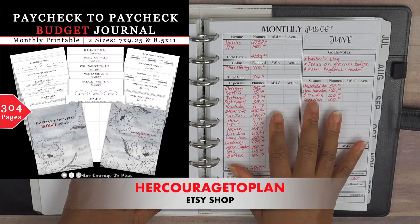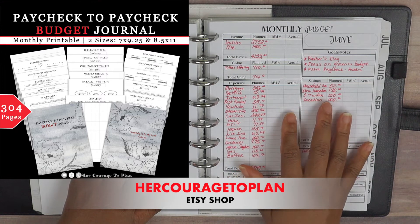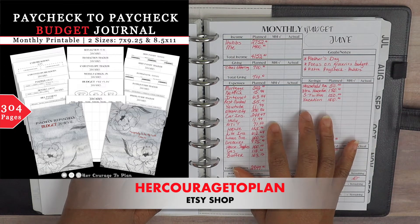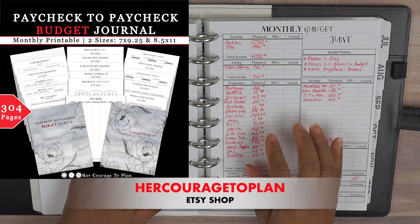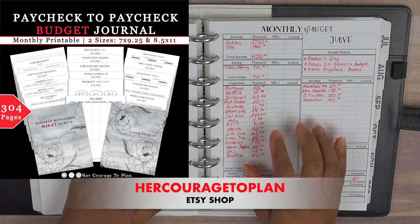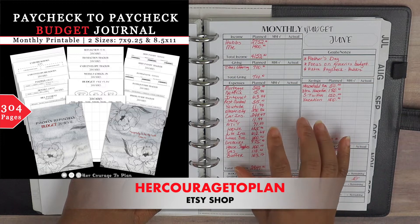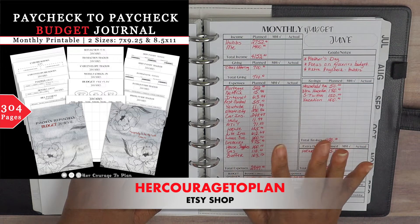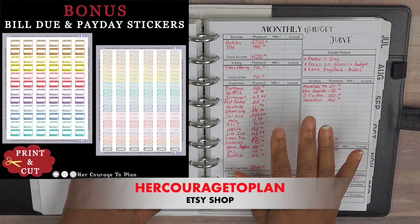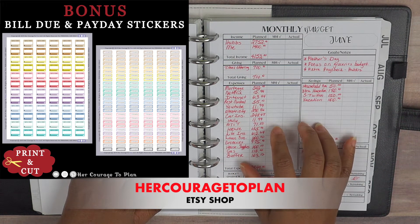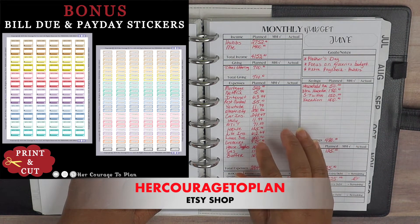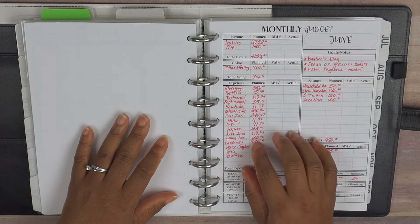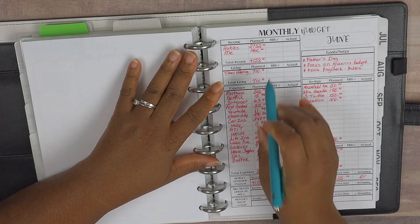this is part of my 12-month paycheck to paycheck budget journal, and if you have not snagged your copy, I do have a link down below in the description box where you can go to my Etsy shop and check it out if you so desire. I do give you a bonus—you get bill due stickers and you do get payday stickers. So if you're interested, please make sure you check that out.